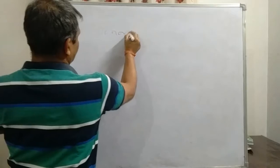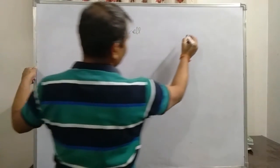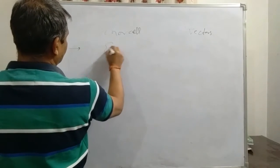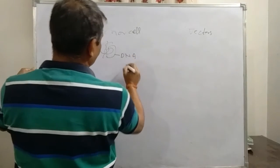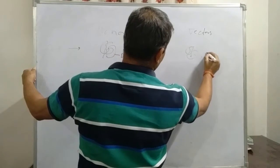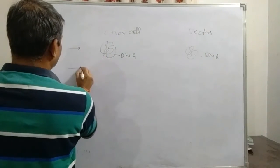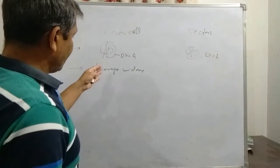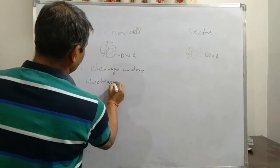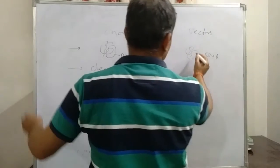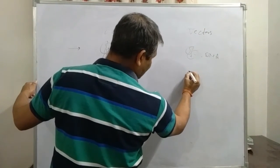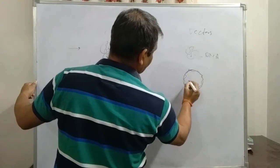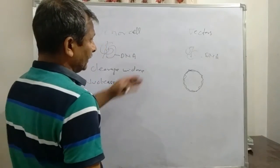So this is the donor cell, and this is the vector. So first of all, we isolate the DNA. This is the DNA of the host cell or donor cell. And here is the DNA of the vector. Now the cleavage is made here. Cleavage is done, it means the DNA is cut into small pieces with the help of the restriction enzymes. Same with the DNA. Here suppose we are using plasmid vector. Plasmid is a circular DNA. It is a circular helical structure in a plasmid vector.